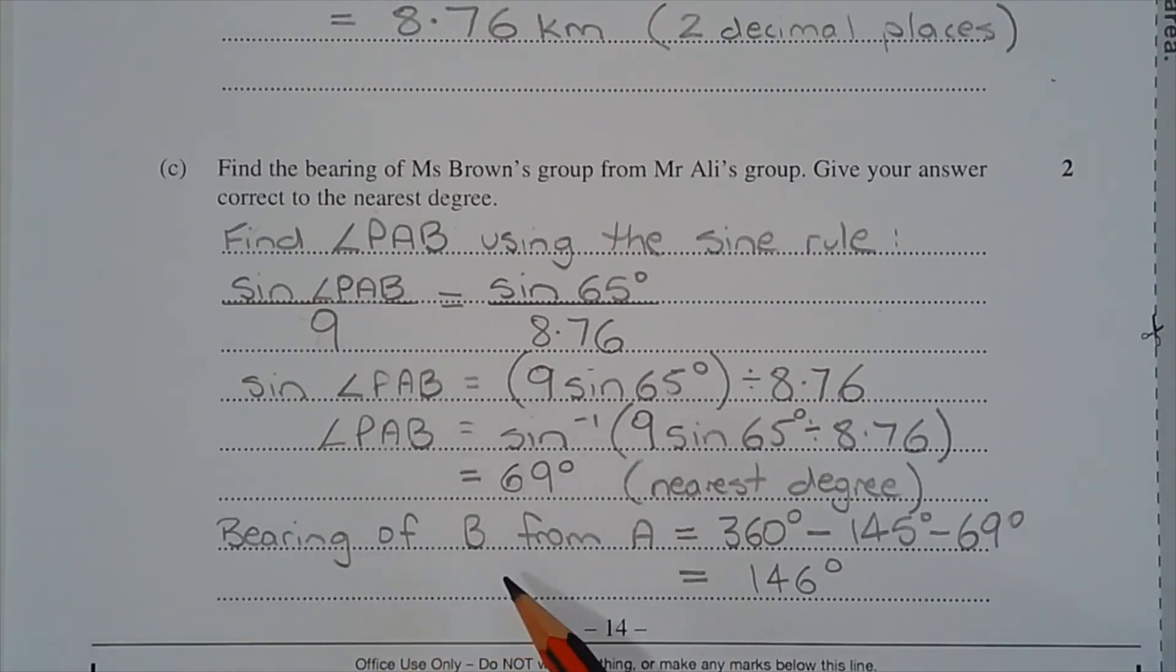So the bearing of B from A is equal to 360 degrees minus 145 degrees minus 69 degrees, which equals 146 degrees.